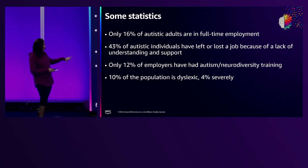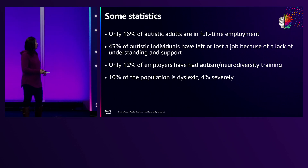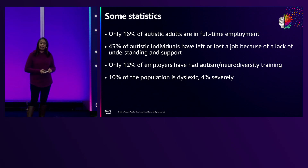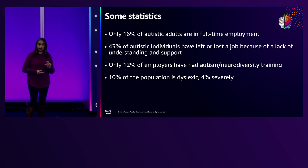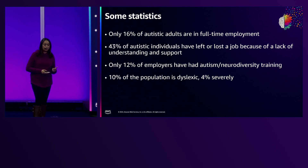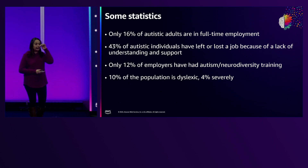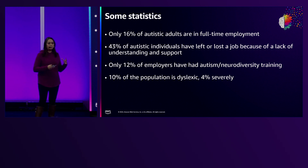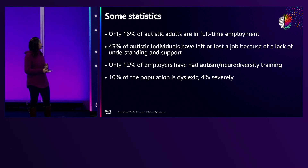On the statistics, two key ones: only 16% of autistic adults are in full-time employment. And 43% of autistic individuals — that's 43% of that 16% — have actually left or lost a job because of lack of understanding and support. It's as simple as creating awareness, having more conversations, and bringing in those enablers that help neurodivergent individuals to thrive.